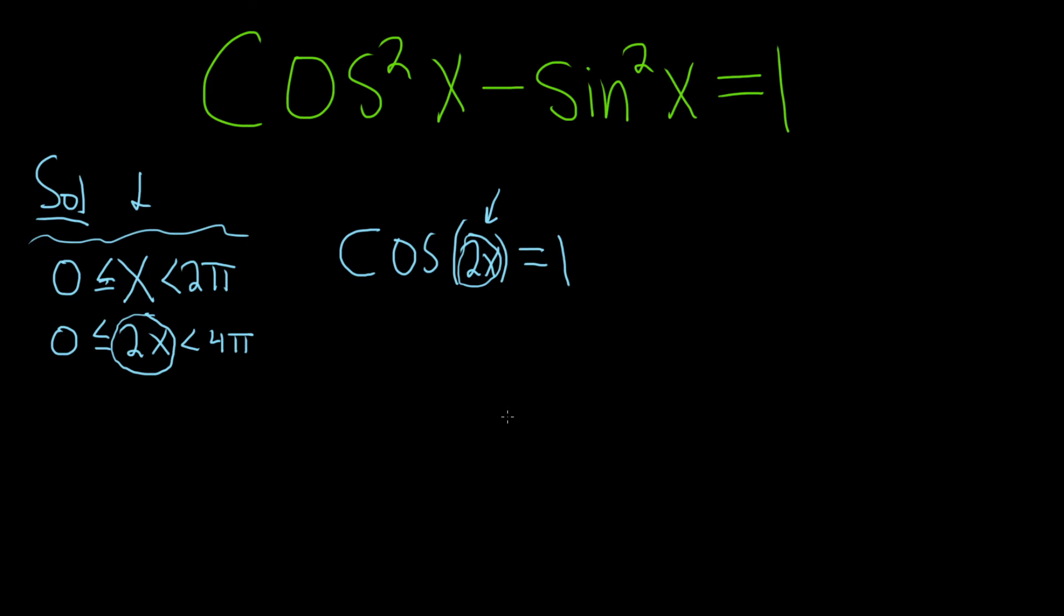So we're looking for all of the values of this, of 2x. You can call it u if you like. If you like, you can do this and let u equal 2x. So all of the values of u, where u is between 0 and 4π, such that the cosine of u is equal to 1. Okay, let's think about the unit circle.